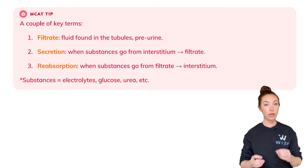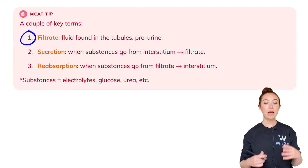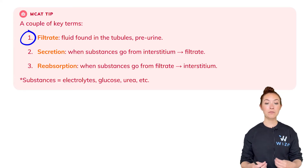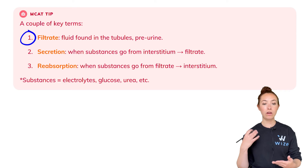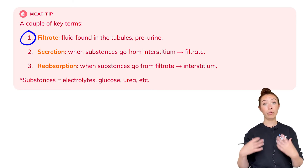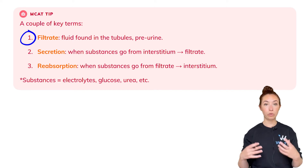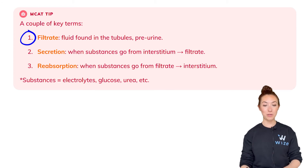A few key terms to know as we go through these lessons. The first is filtrate — fluid found in the tubules, essentially a pre-urine. Whatever gets filtered from the blood — plasma ions, electrolytes, glucose, etc. — that gets filtered out into the glomerulus and into the tubules of the nephrons is called filtrate. In the future that's going to become urine, so you can think of it as the pre-urine.